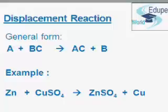What is a displacement reaction? A displacement reaction is a reaction in which an element and a compound react to form different substances by mutual exchange of atoms or group of atoms. It is called a displacement reaction.